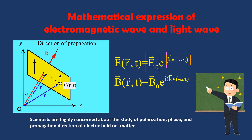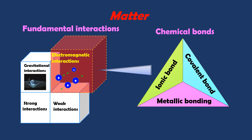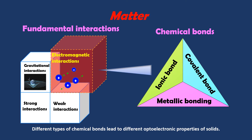Scientists are highly concerned about the study of polarization, phase, and propagation direction of electric field on matter. Electromagnetic interaction is one of the four fundamental interactions. Different types of chemical bonds lead to different optoelectronic properties of solids.